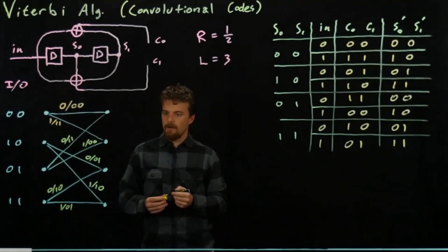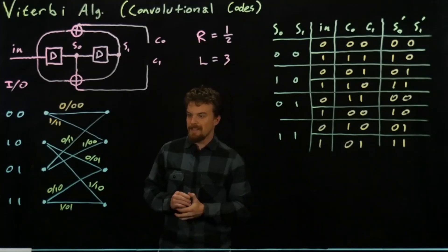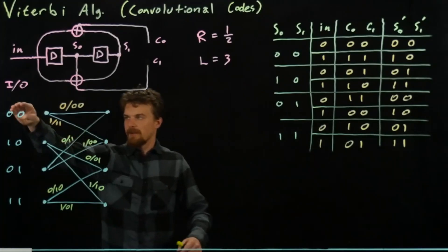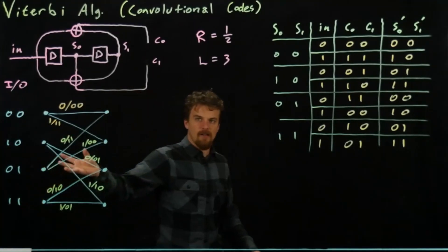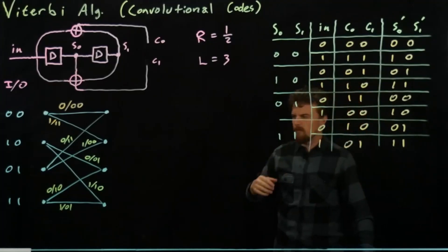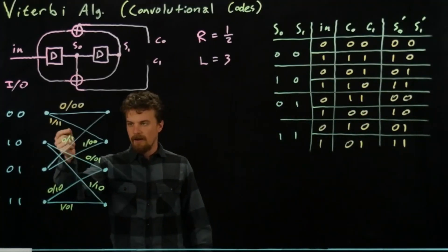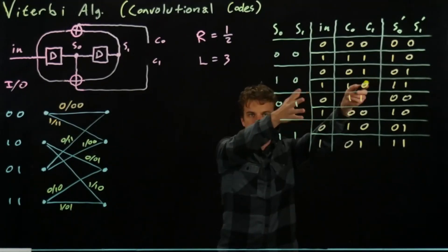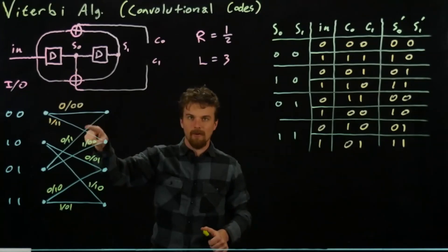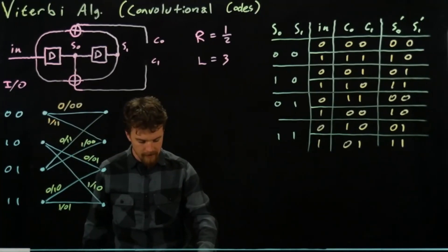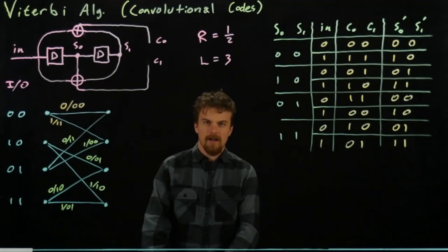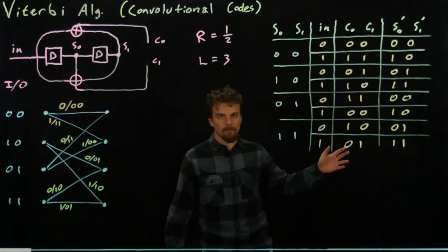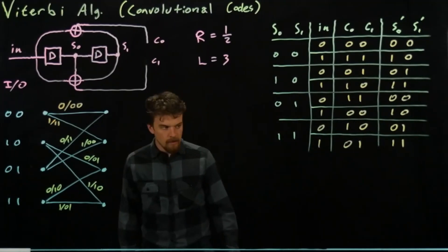This trellis diagram contains all the same information as the state table — and possibly more, since it's more visual. This is the preferred method of writing this down, and it's what you'd see on a homework problem or exam. Sometimes on a problem you'll only be given the trellis and wonder what it means — now you know. I'm going to pause here to erase the board and then we'll do the Viterbi algorithm for a given received sequence.